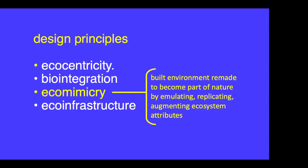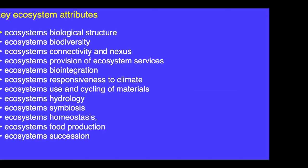I started to do research on ecosystem attributes that we need to emulate. Here is a partial list. We have to emulate ecosystems' biological structure, biodiversity, connectivity and nexus, provisioned ecosystem services, biointegration, responsiveness to climate, use and stacking of materials, hydrology, symbiosis, homeostasis, food production, and succession. These are some of the key ones I can identify.